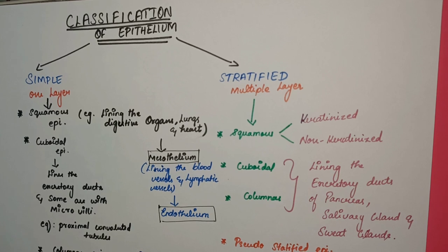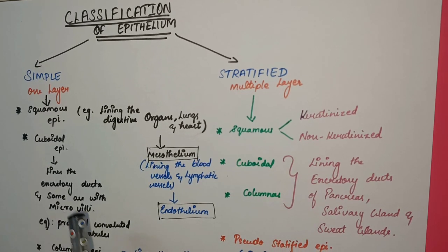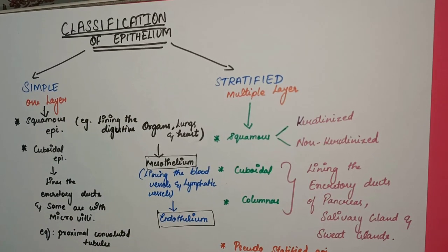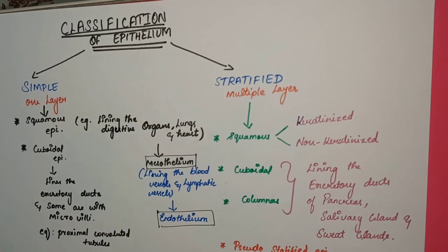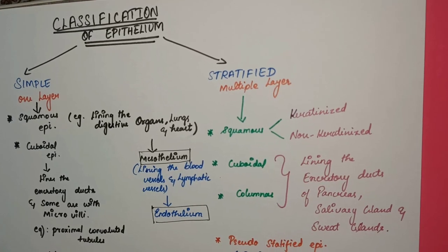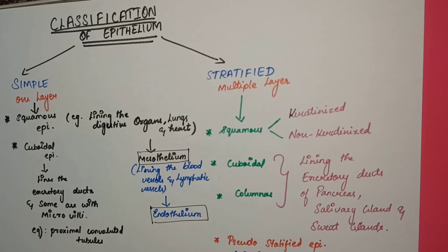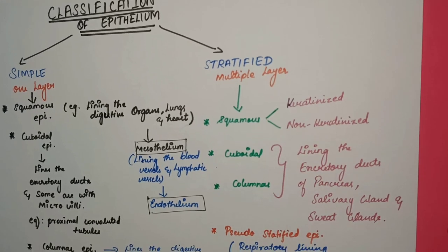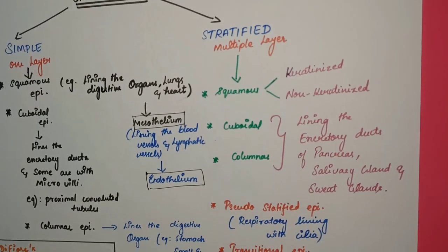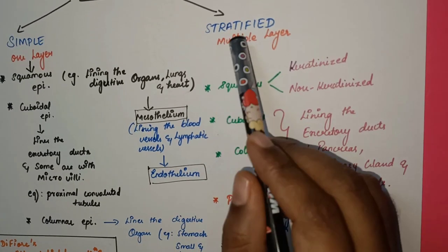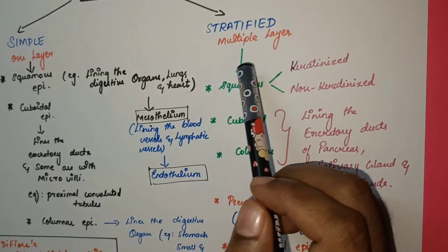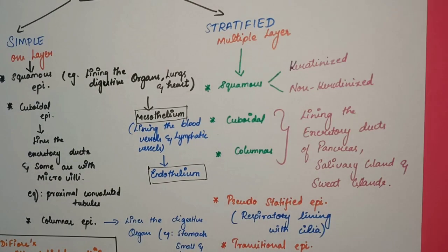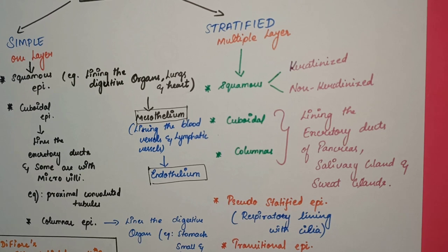When you see the classification of epithelium, there are two variants: simple epithelium and stratified epithelium. Simple epithelium is nothing but one single layer of cells arranged in architecture. Stratified epithelium is a multiple-layer cellular arrangement. Simple is one layer and stratified is multiple layers — that is how the names have been given.